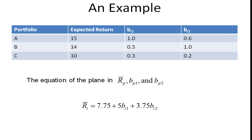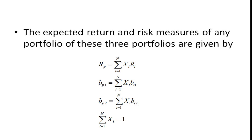The expected return and risk measures of any portfolio of these three portfolios is just a weighted average of these returns. So it's a proportion you have in stock one times the expected return of stock one, plus the proportion you have in stock two times the expected return of stock two, etc. Beta for the portfolio for the first factor is just a weighted average of all of these bi1s for the different securities in the portfolio. Likewise for bi2. If we sum up xi, it equals one, so we're 100% invested.